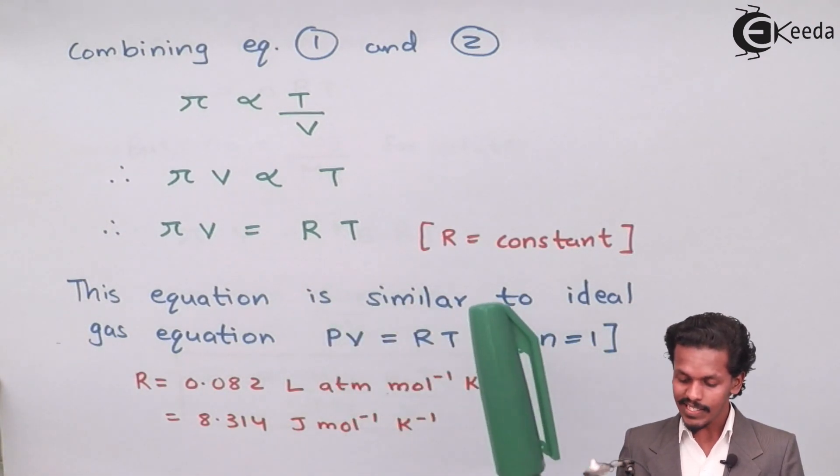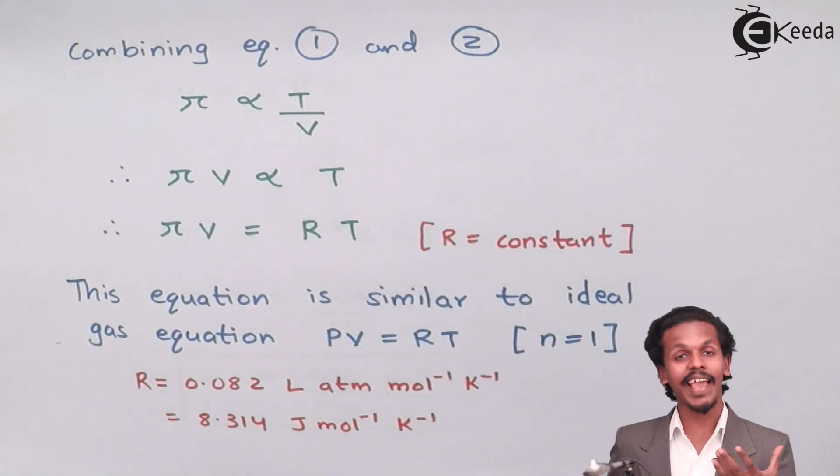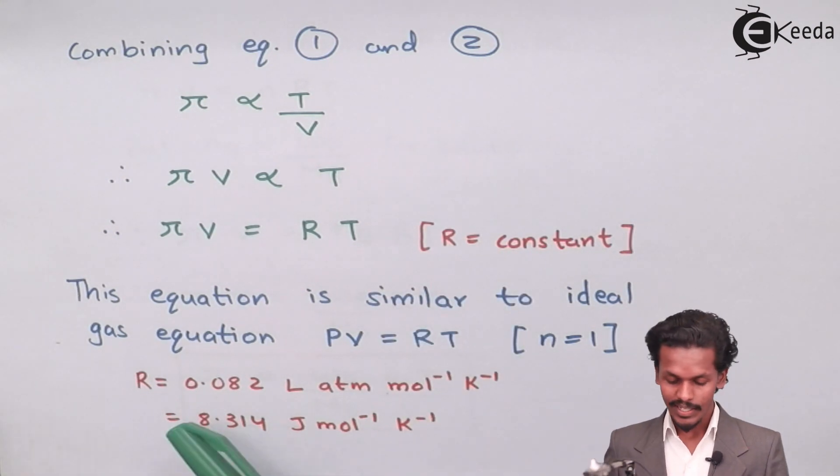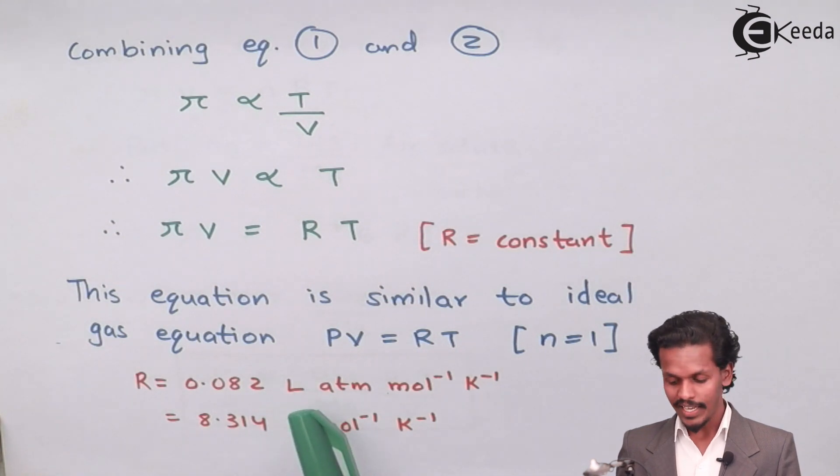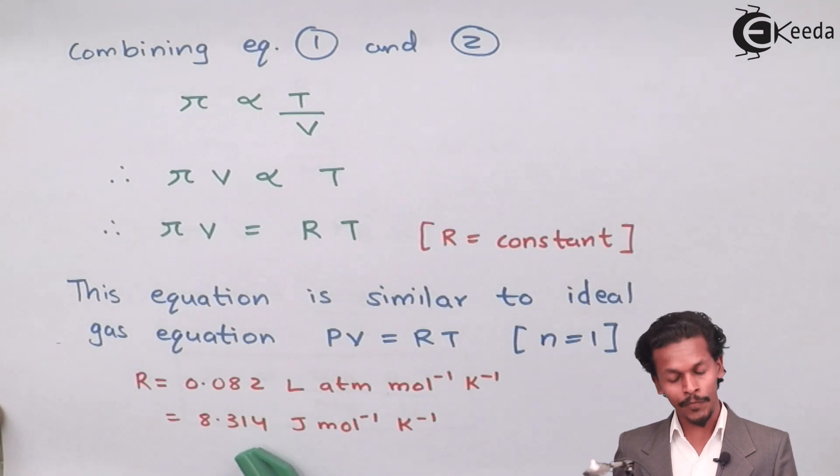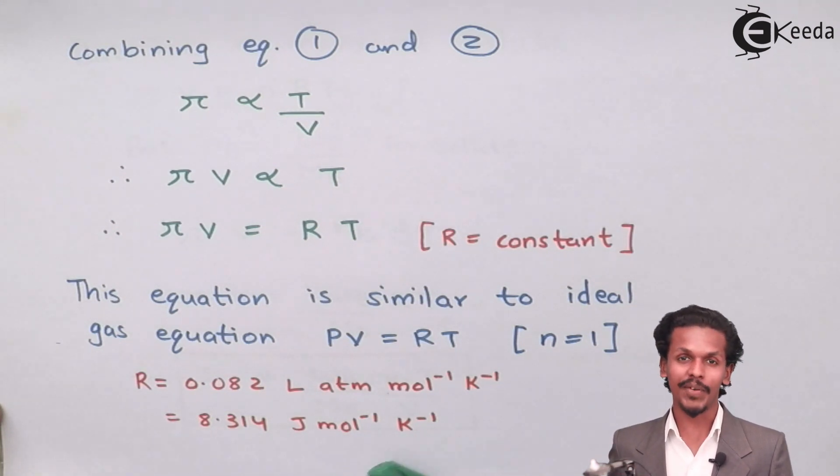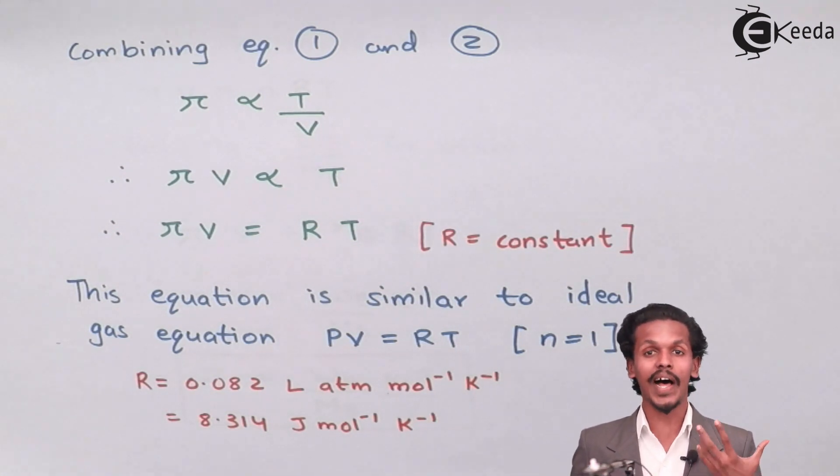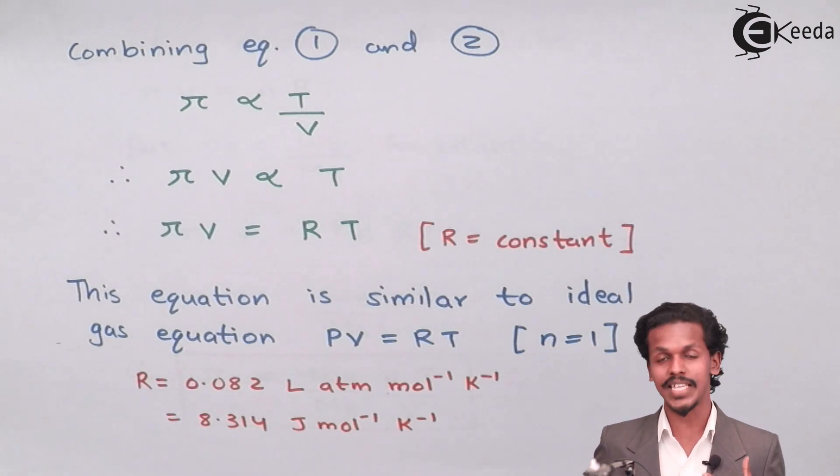Therefore, R is the gas constant which has a value of 0.082 liter atmosphere per mole per Kelvin, or 8.314 joules per mole per Kelvin.